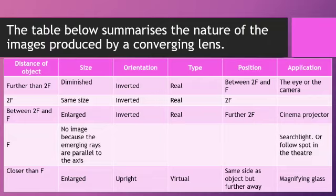If the distance of the object is between 2F and F, the image produced is enlarged, it is inverted, it is real, and located further to F. This applies to the cinema projector.